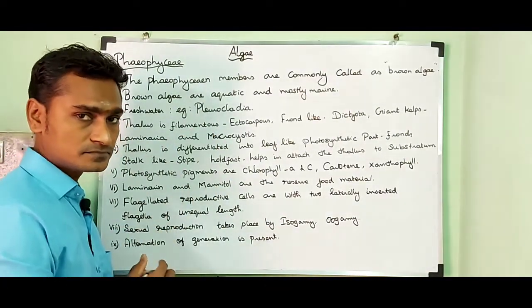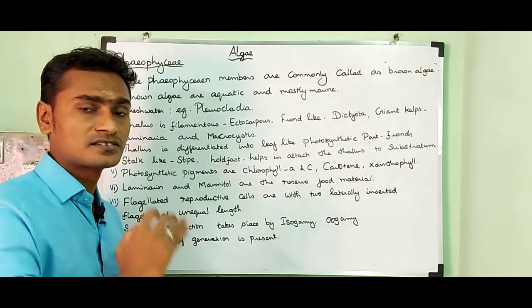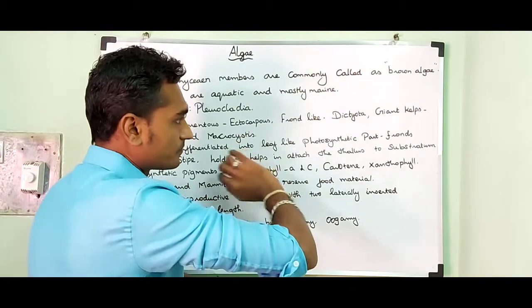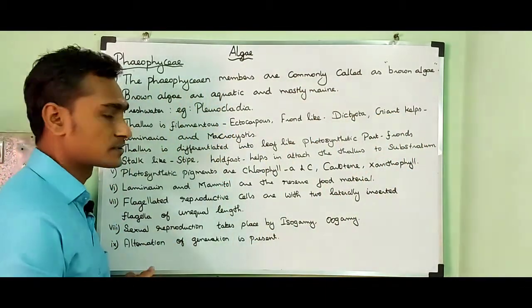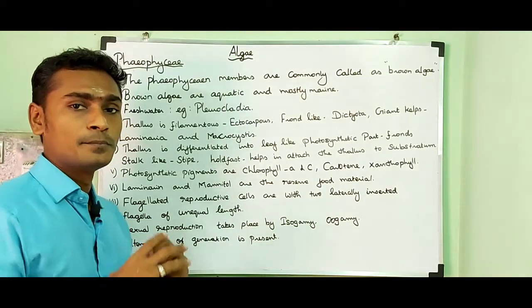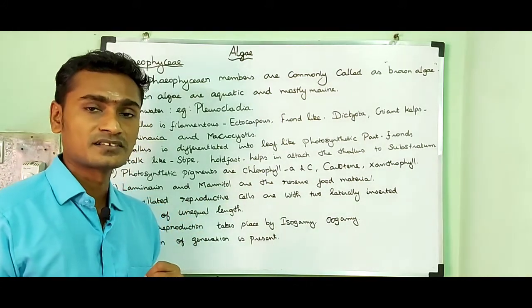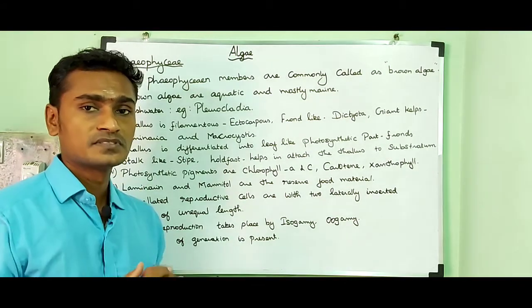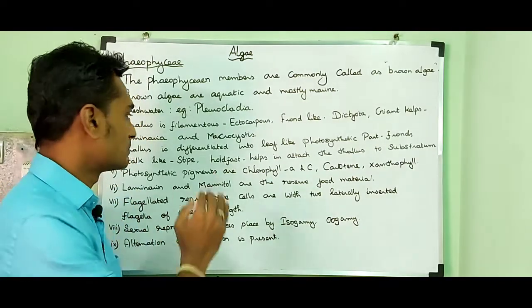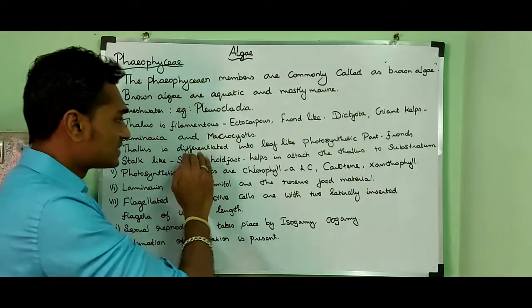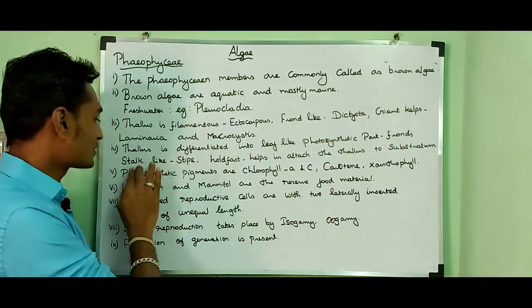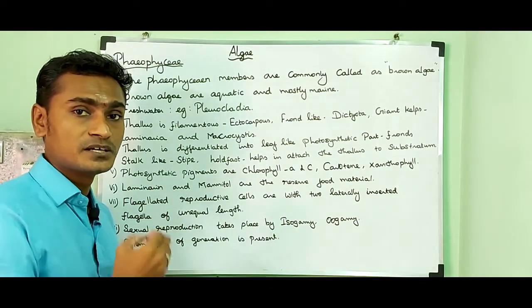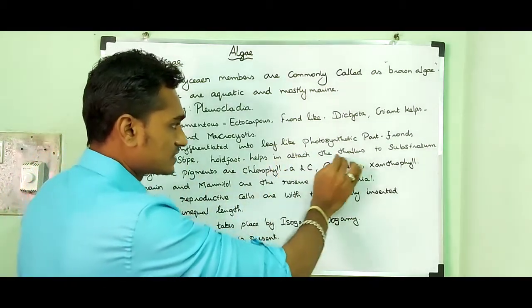The thallus is filamentous — the plant body is filamentous, long, and may be branched or unbranched; example, Ectocarpus. Frond-like means a leaf-like structure; example, Dictyota. Giant kelp examples include Laminaria and Macrocystis — macroscopic algae. The thallus is differentiated into a leaf-like photosynthetic part called the frond, a stalk-like structure called the stipe, and a holdfast which attaches the thallus to the substratum.